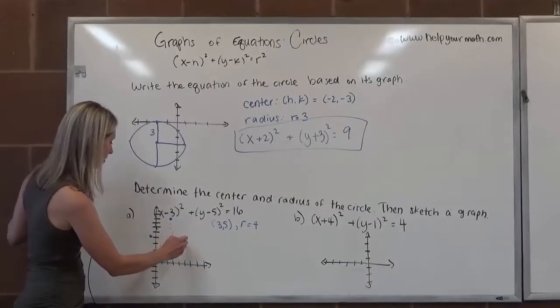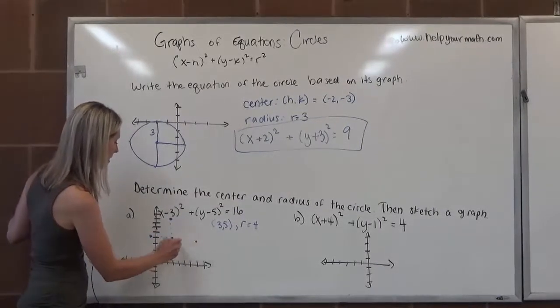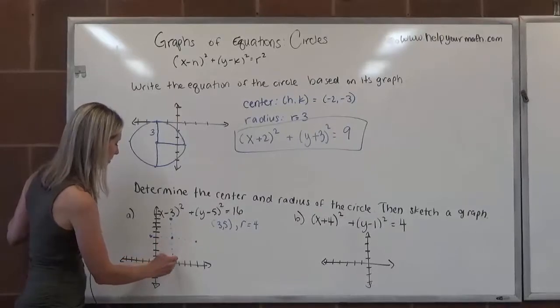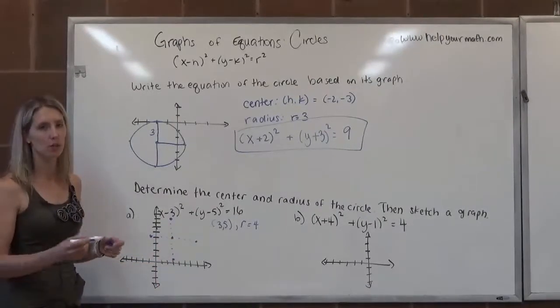I'm going to go to the right, 1, 2, 3, 4. And I'll go down, 1, 2, 3, 4. So that gives me four points on the circle.